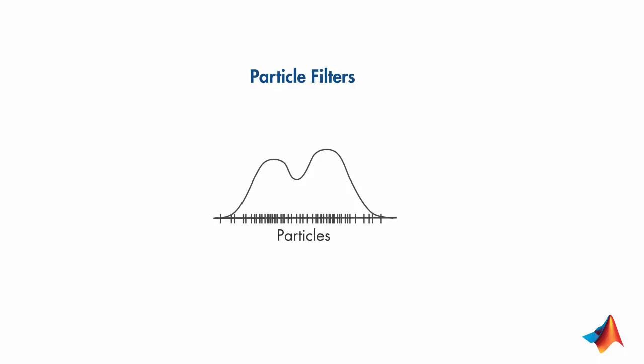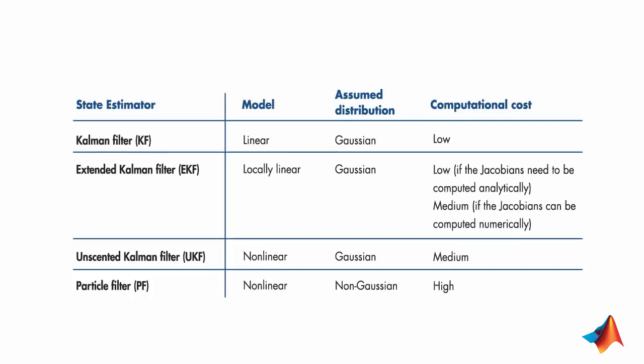For comparison, here are the properties of the filters that we've discussed so far. A Kalman filter only works on linear systems. For state estimation of nonlinear systems, you can use an EKF, UKF, or PF.